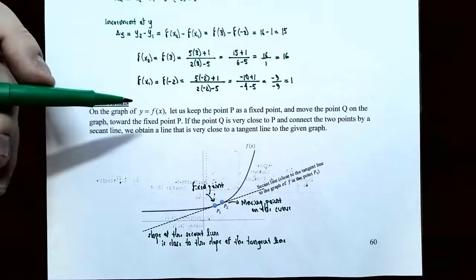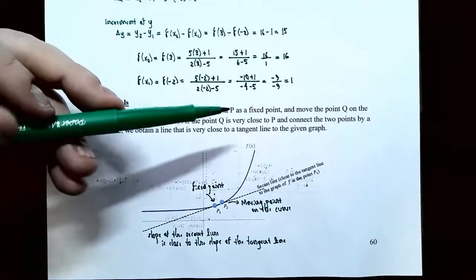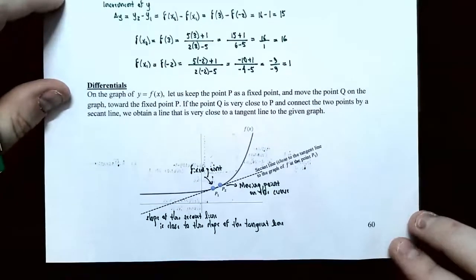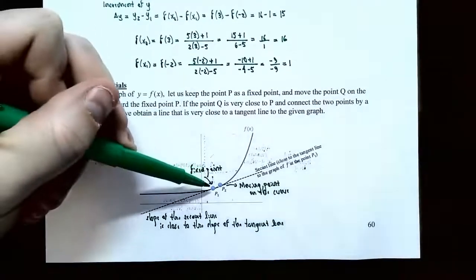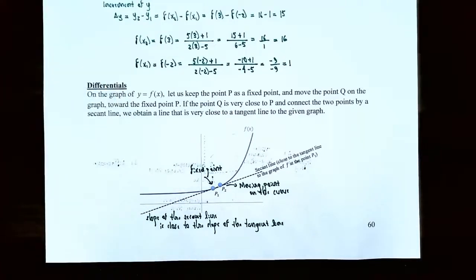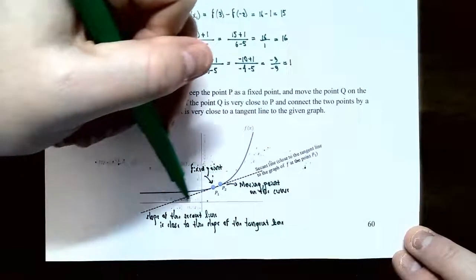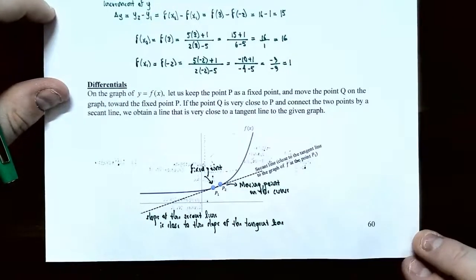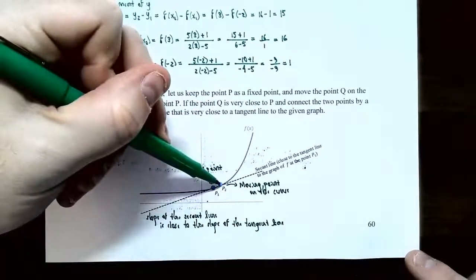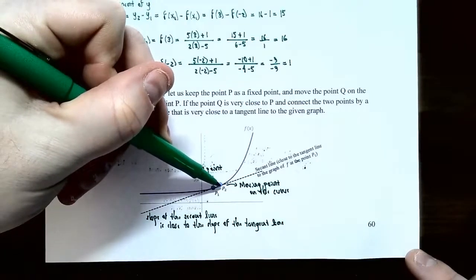On the graph y equals f of x, let's keep point P as a fixed point — it does not move. You have point Q on the graph, and you're going to move Q towards the fixed point P. Just like with the tangent line problem, we take slopes of secant lines and use a limit process to calculate the slope of the tangent line. You construct a line between P and Q — the secant line — and move Q closer and closer to P along the curve.